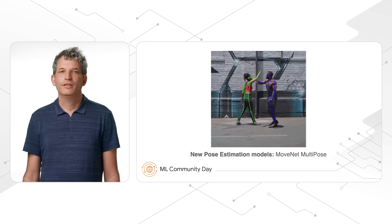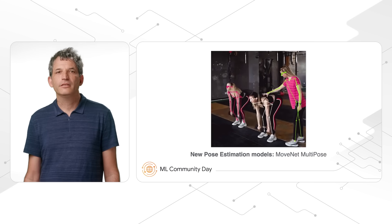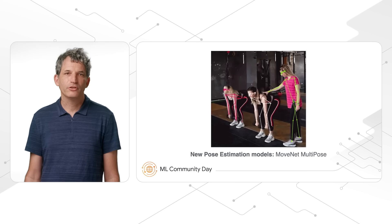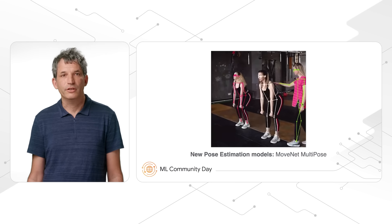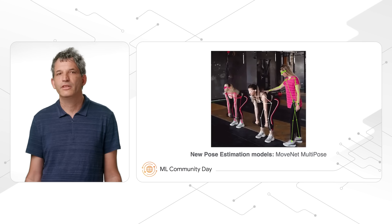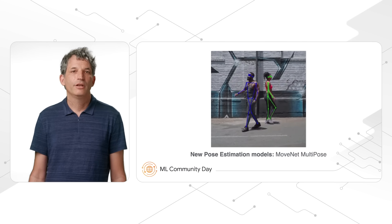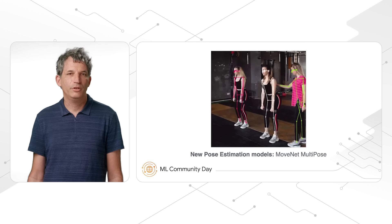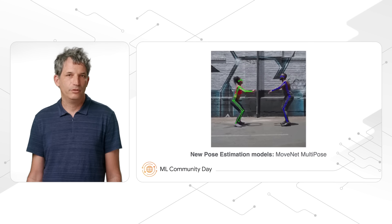Here we see MoveNet's single-person detection model. We also just recently launched a new multi-person detection model of MoveNet. This model can not only detect multiple people, but also track their movements. As shown here, even if two people exchange positions, the model can still identify whether the person who moved positions is the same person. For more inspiration, check out what the TensorFlow.js community has made by searching hashtag #MadeWithTFJS on social media.